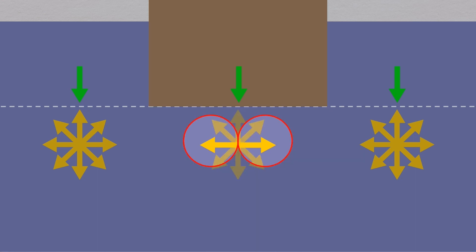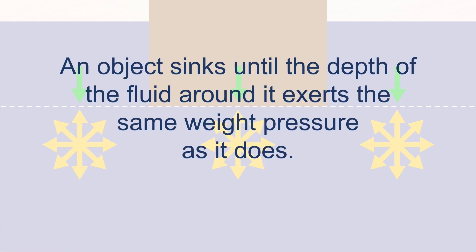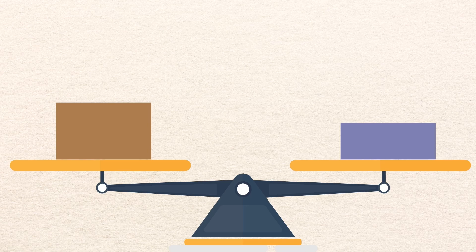As we know, however, pressure pushes out in all directions, meaning the sideways pressure of the water also matches the weight pressure of the object. So what keeps our column of water from bursting outward and collapsing? The answer is the neighboring water, whose sideways pressure must therefore also match the object's weight pressure. This can only happen if the downward weight pressure above it also matches the weight pressure of our object. In short, an object keeps sinking until the depth of the water around it exerts the same weight pressure as it does.